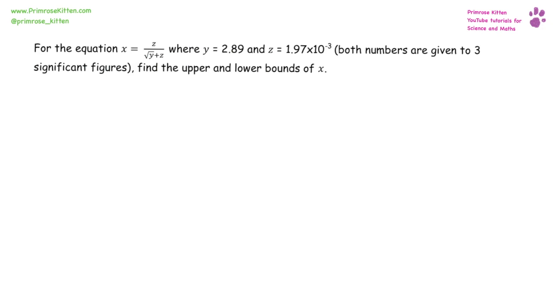For the given equation, x equals z over the square root of y plus z, where y equals 2.89, and z equals 1.97 times 10 to the minus three, both numbers given to three significant figures, find the upper and lower bounds of x.